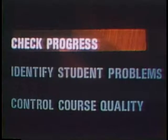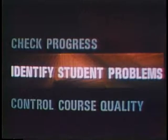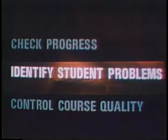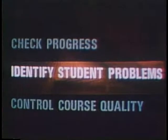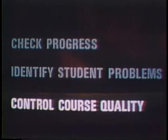What criterion reference testing does is, first, check student progress throughout the course — it tells us if the student is acquiring the knowledges, skills, and attitudes represented in the objectives. Second, it identifies student problems. After a problem is identified, the student and the instructor can correct it. And third, it serves as a quality control measure. When weaknesses are identified, the instruction can be revised to improve effectiveness.